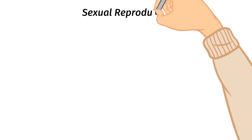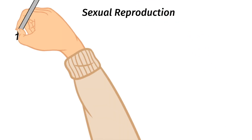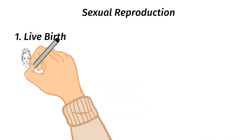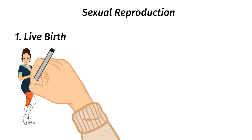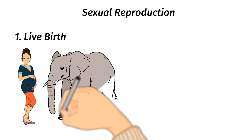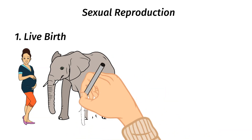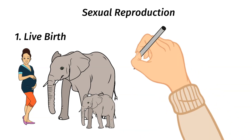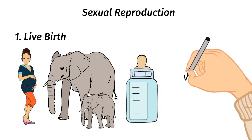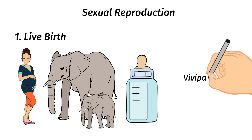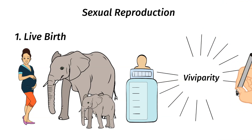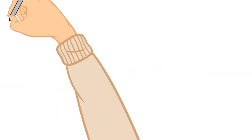The first type of sexual reproduction is through live birth. This is the type of reproduction that most mammals use, where a baby will grow inside their mother until they are born alive — not in an egg or any type of capsule. Another characteristic of mammals besides live birth is that they feed their babies by making milk for them. This type of reproduction is called viviparity.